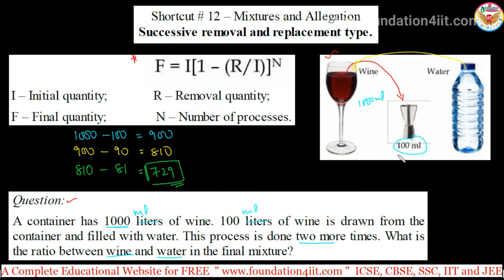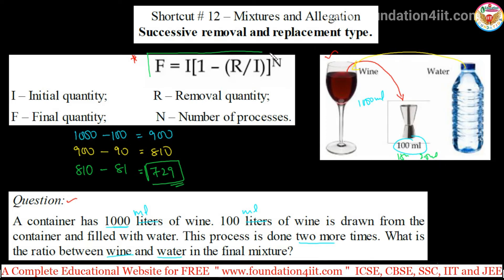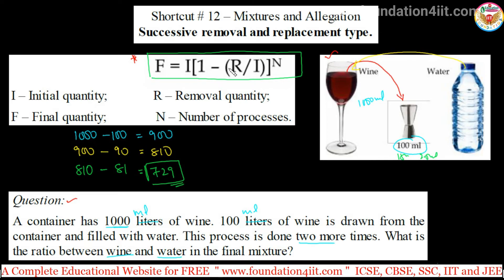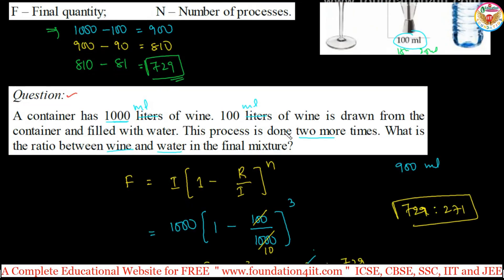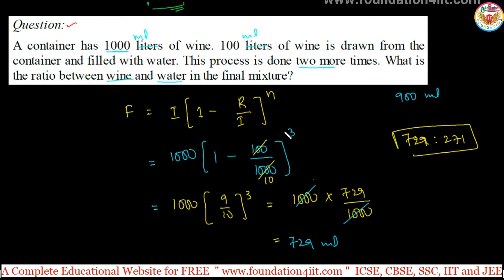In cases where they are asking to remove 15 ml or 2.5 ml — those times we can apply this formula directly. So I is the initial quantity, R is the removal quantity, N is the number of processes — how many times it was done. If you know exactly what percentage they are removing, or else we can apply the formula and get the ratio between those two.